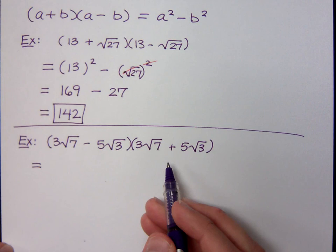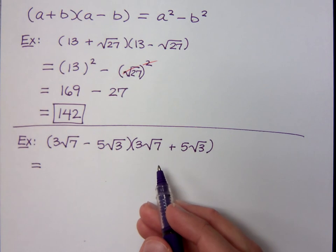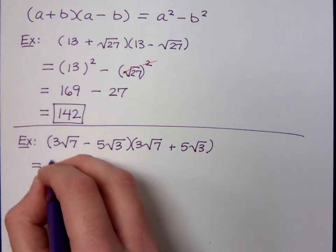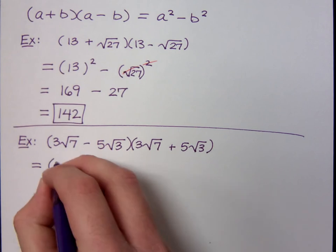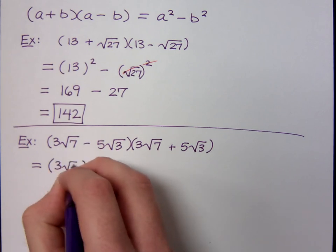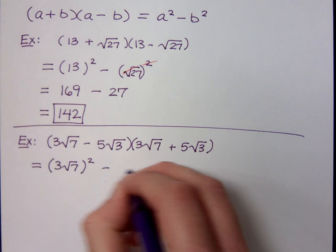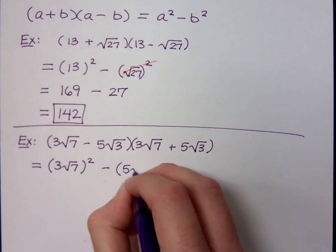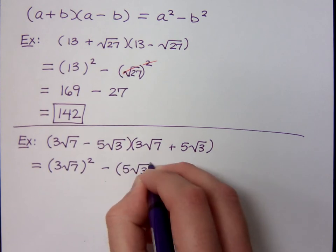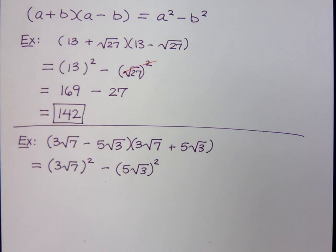Now, are these guys conjugates? Will they multiply to give me the difference of squares? Yes. Yes. Now, I want you to go through this piece by piece, and if you do it step by step, you won't have any problems. So that means I'm going to have three square roots of seven squared, and then minus, because this is a difference of squares, five square roots of three squared. Do y'all agree?